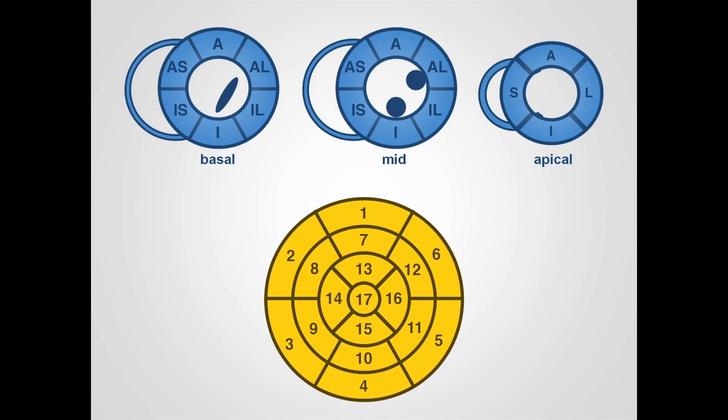When we assess and describe left ventricular regional function in our CMR studies, we make reference to left ventricular segments. Most CMR centres use either a 16 or 17 segment model to describe the left ventricle. In this diagram, we have three short-axis views of the left ventricle at the top of the screen — these being the basal, mid and apical short-axis slices.